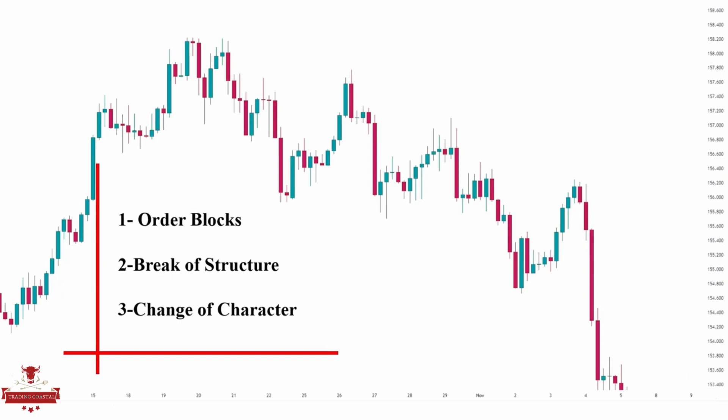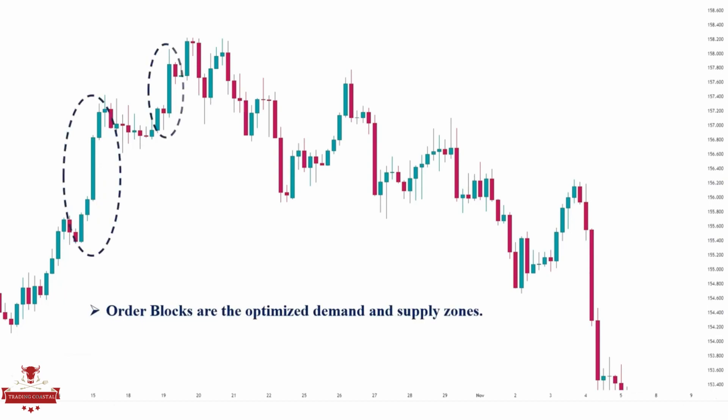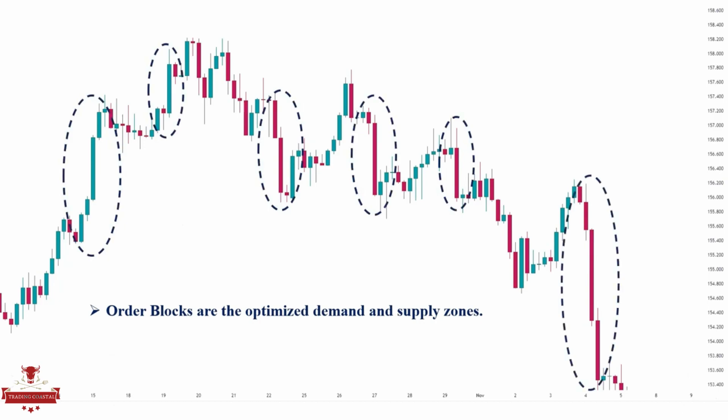Let's start with the order blocks. Order blocks are the optimized demand and supply zones. They form when a large amount of money enters the market, resulting in a massive move — in other words, when there is an imbalance between the buyers and the sellers.